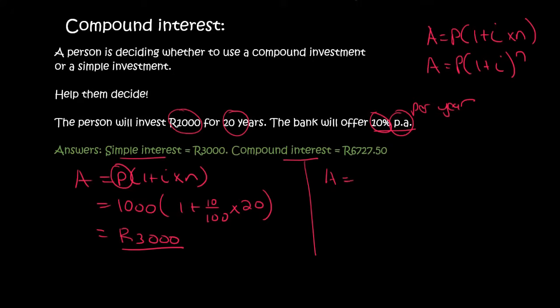Compound interest uses A equals P times 1 plus I to the power of N and so P is 1000 rand also 10 percent but now the number of years is 20 but we put it at the top. So if you go type all that in you end up with 6727 rand and 50 cents.